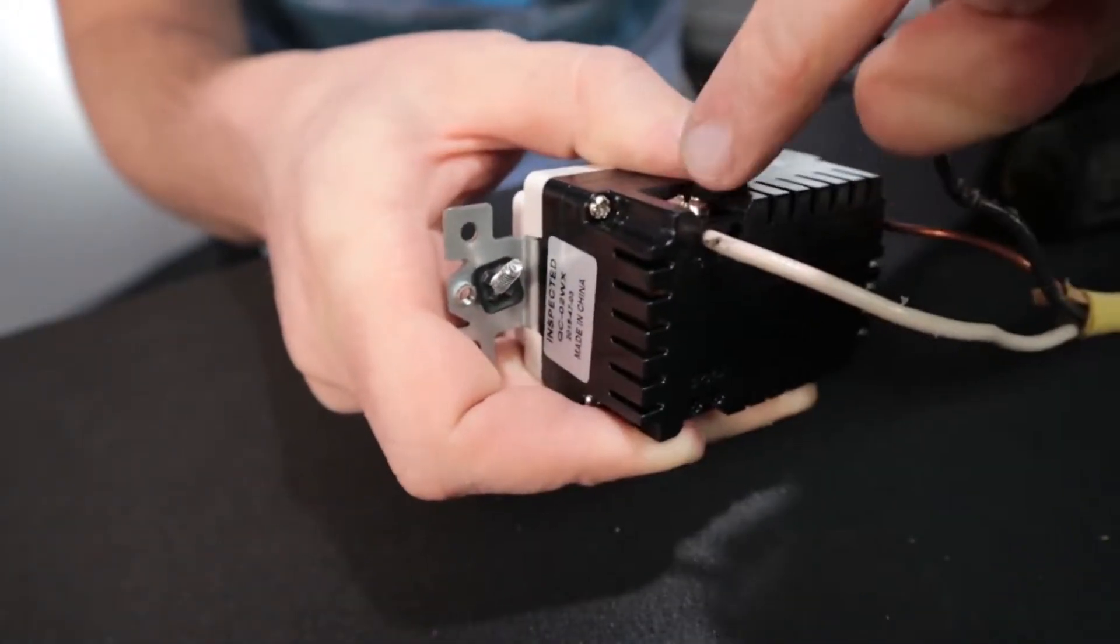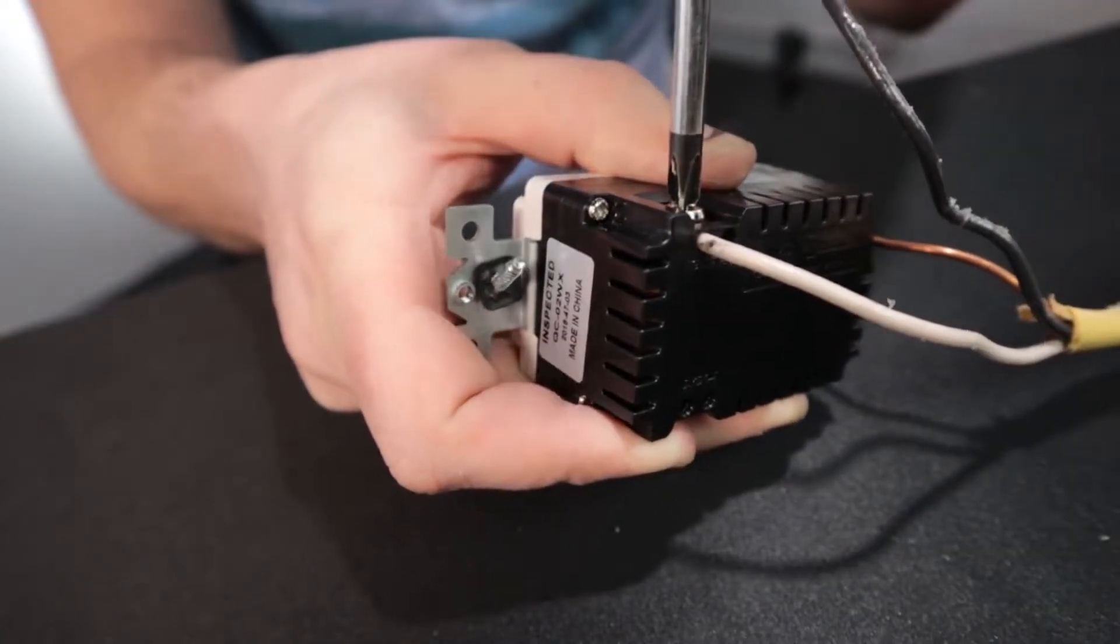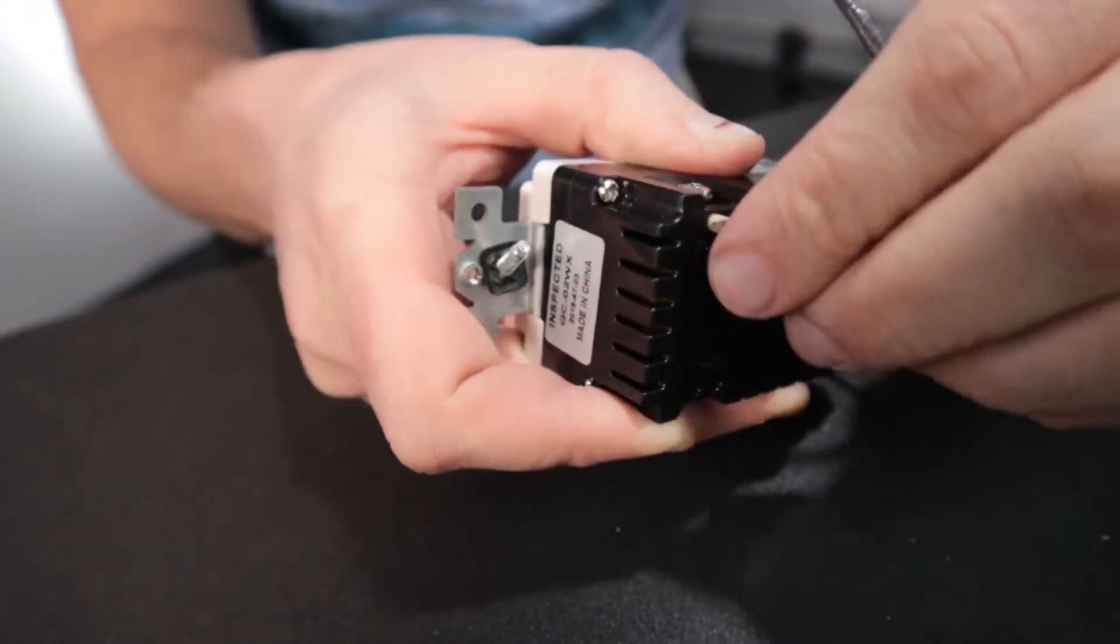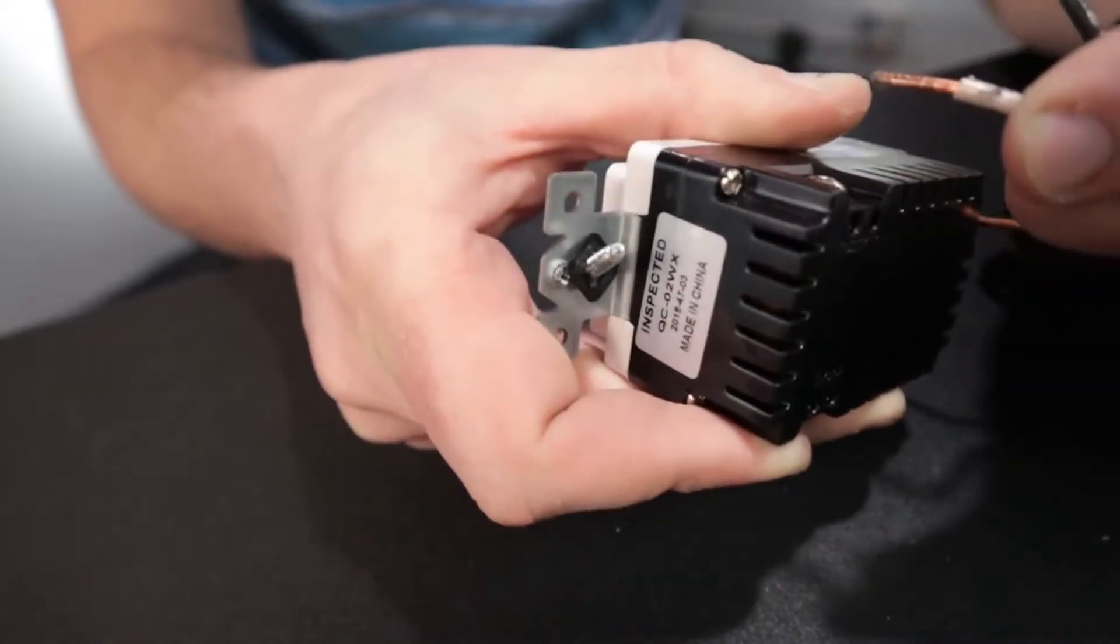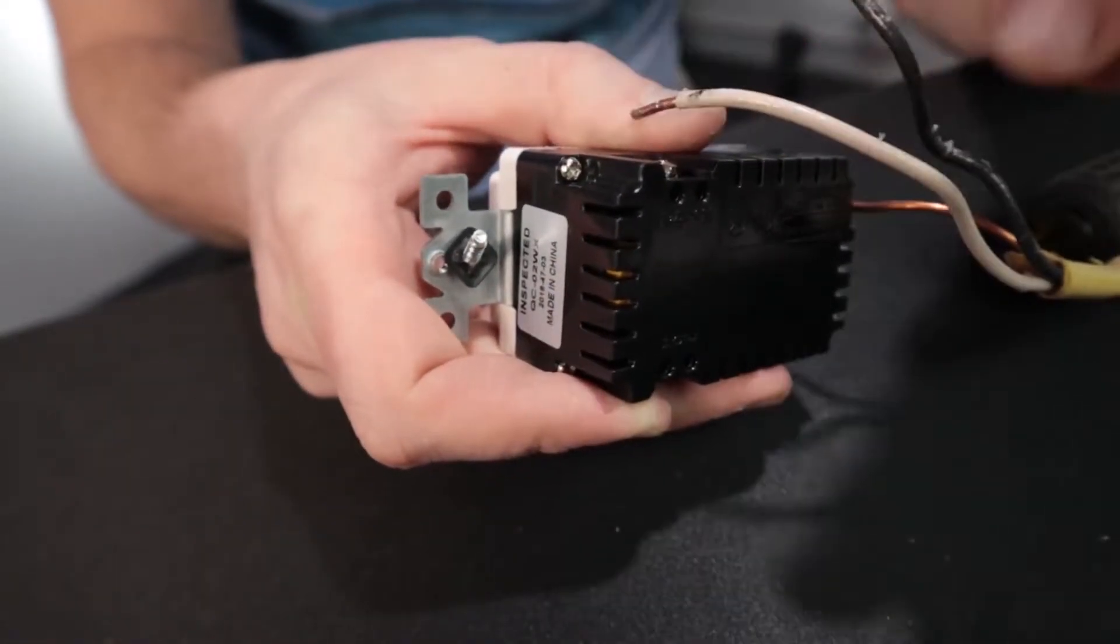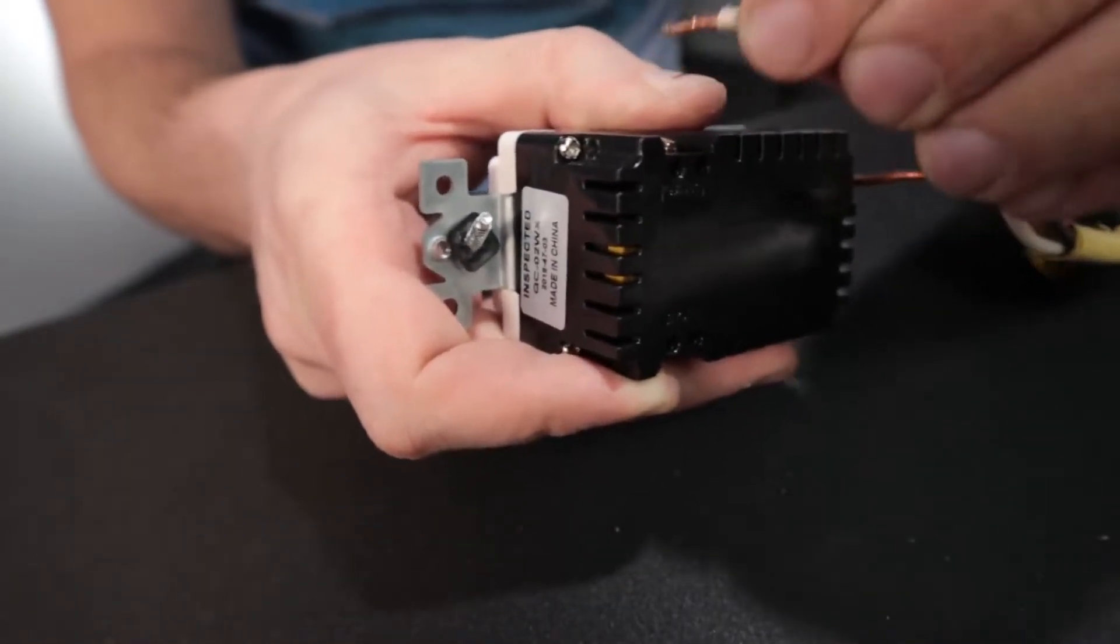If this were any looser, I'd be able to pull this out. So just make sure that you don't have it too loose that this will actually pull out because otherwise you'll put it back in the box and either it will pull out or it'll just be loose and not make contact.